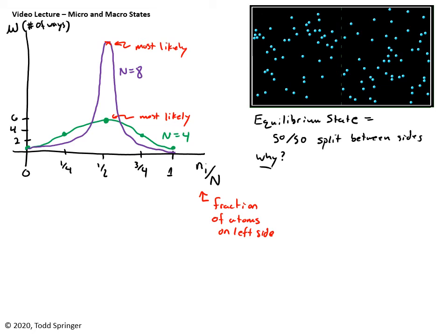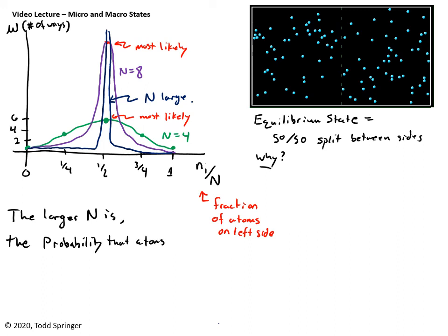Now imagine you have 1000 particles or 10,000 or 100,000 or 10 to the 23, like in a gas. Can you generalize this? What's going to happen? If you have a really large number, it's going to be basically zero until you get to about a half, which is the most likely case. And then you have a huge spike here all the way up, really, really high. And then very, very, almost very, very unlikely anywhere else. So this one here is n is large. And you can see that the larger n is the equilibrium state or the probability that the atoms are equally spread out is overwhelmingly large.